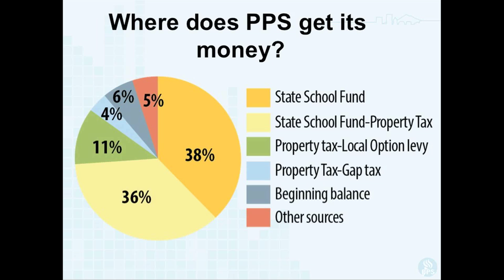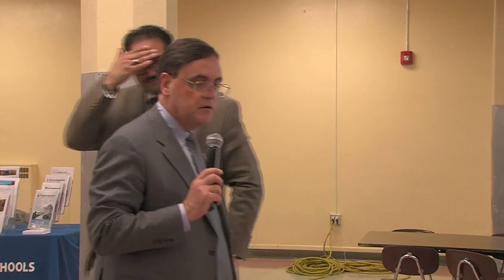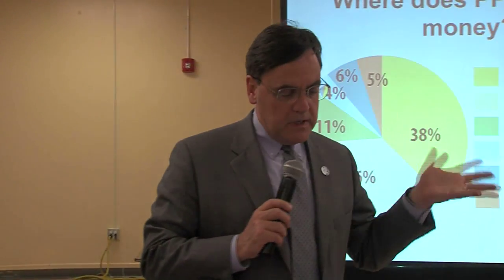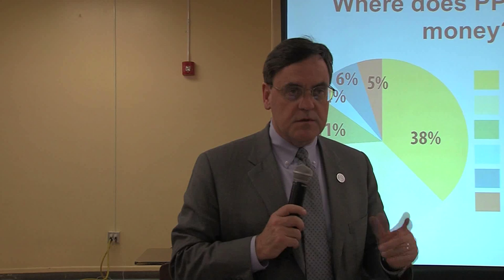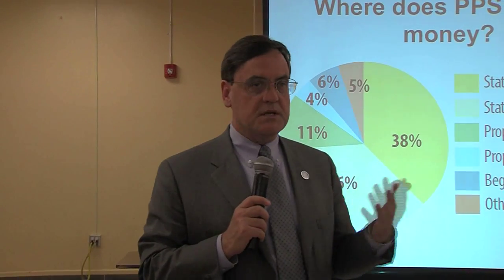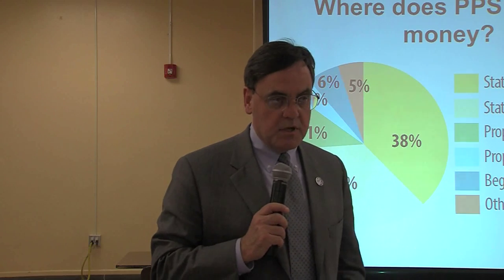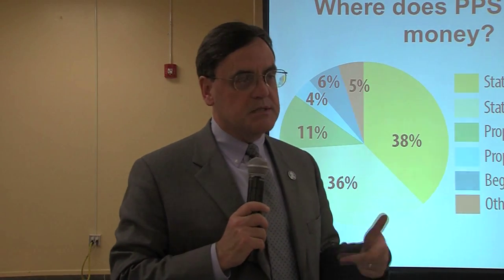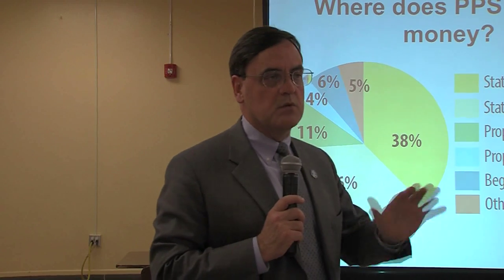Three quarters of the money we get each year is through the state school fund. The state school fund money comes in two ways: there's the permanent rate property taxes that we collect locally, and then there's the state school fund grant. Those two funding sources combined make up 74% of our revenue. Looking back over the last couple of years, it's been plus or minus around three quarters.